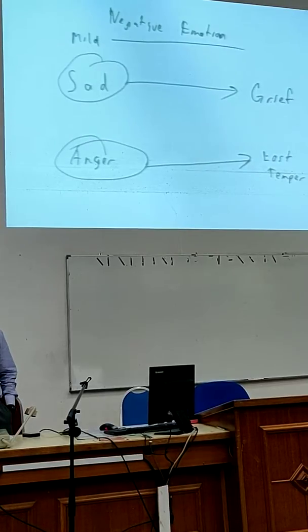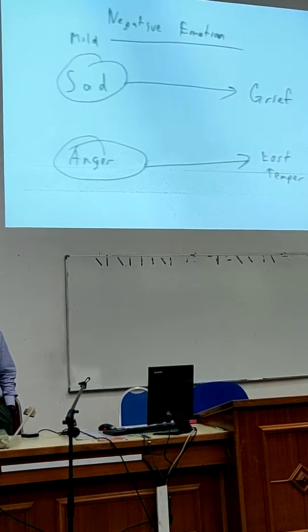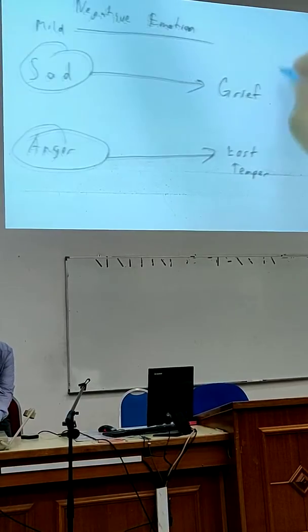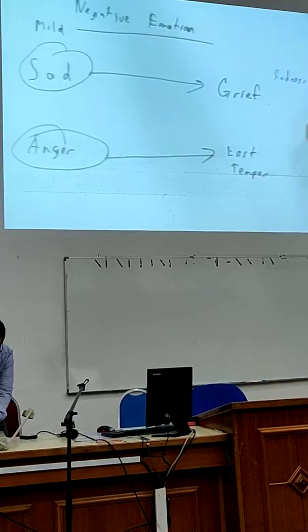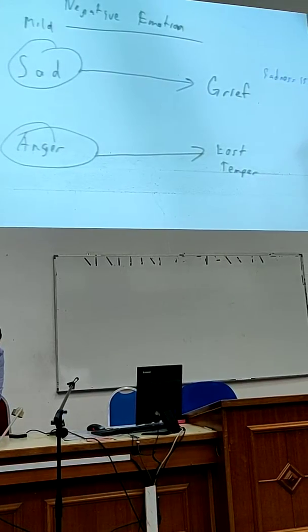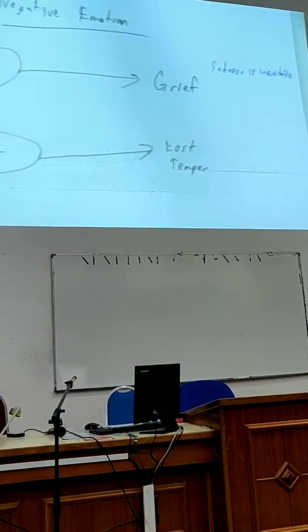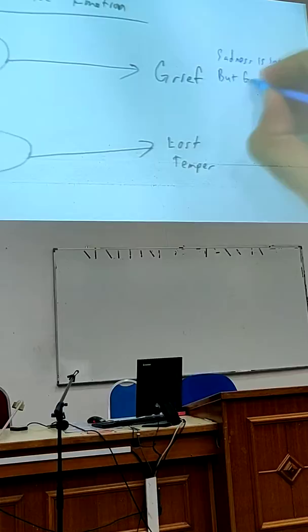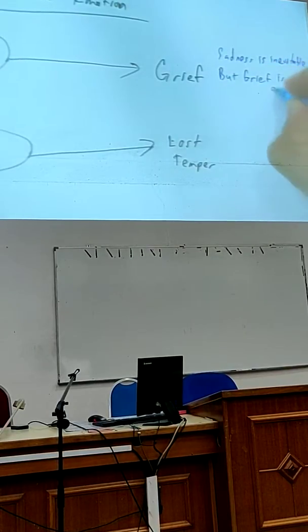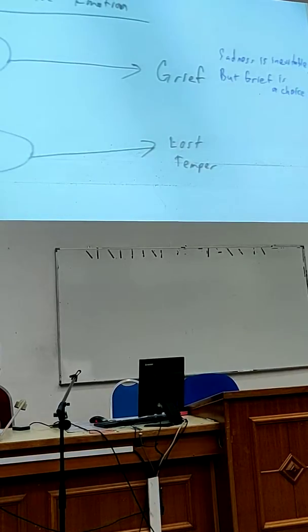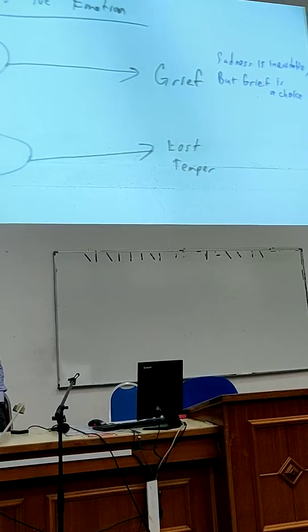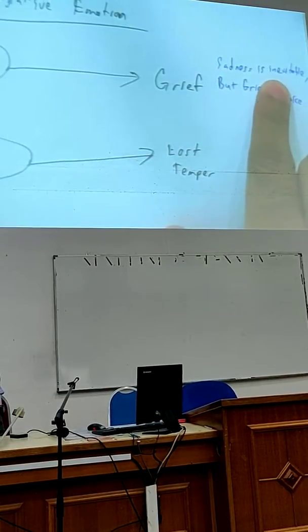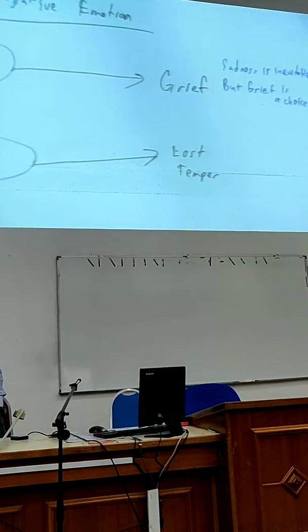And anybody here read Haruki Murakami? Haruki Murakami. He said this line. Sadness is inevitable. That means you will feel sad. Barking. Grief, it's a choice. Do you understand what it means? You cannot avoid sadness. It will happen in this world. But grieving, when you feel an extreme emotional upset, that is a choice.